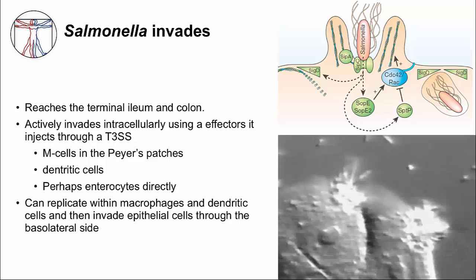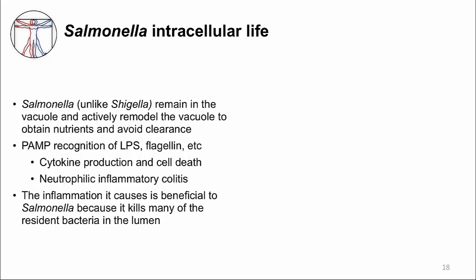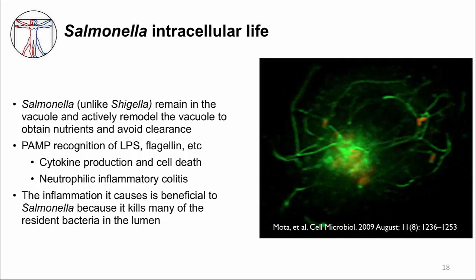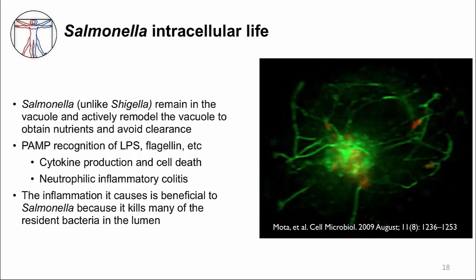The host cell engulfs Salmonella into a vacuole. Dendritic cells extending their processes between epithelial cells can also take in Salmonella, and it's possible that Salmonella directly invades enterocytes. Regardless of how they cross the epithelium, Salmonella can survive in macrophages and dendritic cells underneath the epithelium and spreads to neighboring epithelial cells from the basolateral side. Once inside the host cell, Salmonella remains in the vacuole — unlike Shigella, which invades the cytosol — to avoid the immune system.